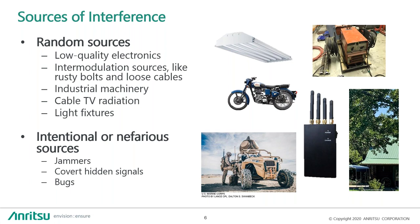Then there are intentional or nefarious sources. In military operations you have jammers; in communication systems you have covert hidden signals — people trying to transmit signals in places where they shouldn't. And then even bugs, which aren't direct interference on the communication system but are a disruption in the normal operation. These are all important pieces of the communication architecture that need to be identified and worked through as you protect your critical communication systems.